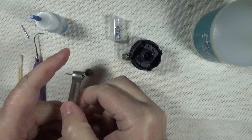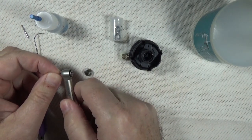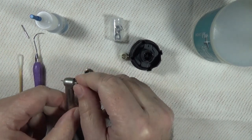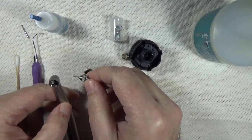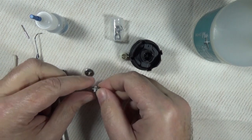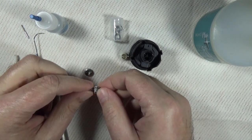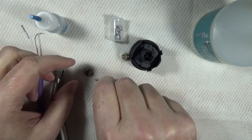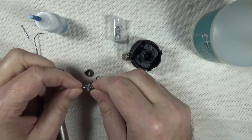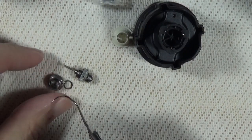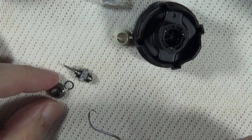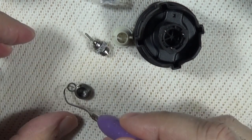The cap's going to come off, and now we can use this burr to push our turbine out. We're going to want to look for two wave washers - there's one on the front side here.